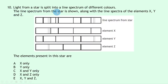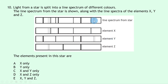Question 10: light from a star is split into a line spectrum alongside spectra of elements X, Y and Z. To find which elements are present, all lines from each element must match lines in the star's spectrum. Element X — all lines match. Element Y — all lines match. Element Z — one line does not match any in the star's spectrum, so Z is eliminated. Elements X and Y are present — answer C.